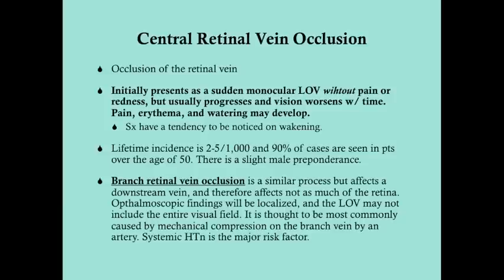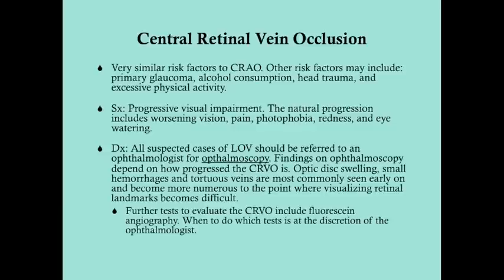Branch retinal vein occlusion is a similar process affecting a downstream vein, with localized ophthalmoscopic findings rather than the whole retina. BRVOs are most commonly caused by mechanical compression of the branch vein by an artery, though other causes exist. Systemic hypertension is considered the most significant major risk factor for BRVOs. Additional CRVO risk factors include primary glaucoma (likely from elevated pressure), alcohol consumption, head trauma, and excessive physical activity.